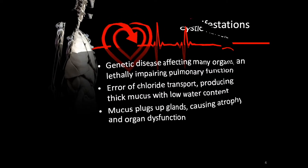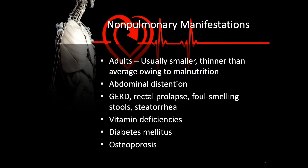Improved medical management has increased life expectancy to about 40 years. Non-pulmonary manifestations of CF in adults include that patients are usually smaller and thinner than average owing to malnutrition. There's usually abdominal distension. The patient has a history of GERD, rectal prolapse, foul-smelling stools, and steatorrhea — the presence of large amounts of fat in the stool. Since many vitamins are fat-soluble and there's a problem with fat, vitamin deficiencies are common.